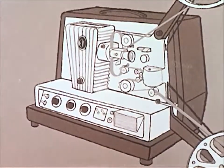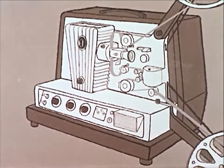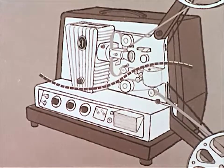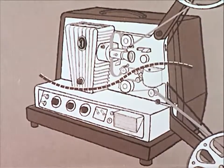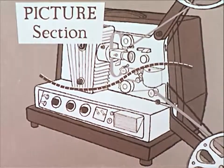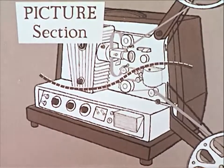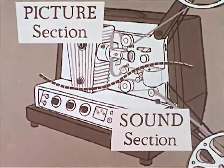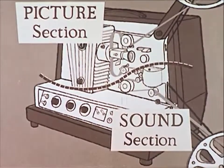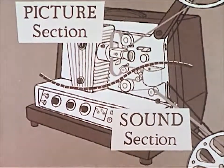A typical motion picture projector consists of two sections, each with a different function: the picture section, which projects the picture from the film to the screen, and the sound section, which reproduces or recreates the sounds which have been recorded on the film soundtrack.